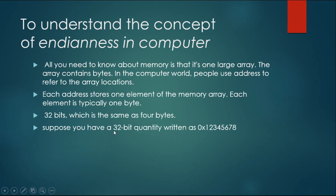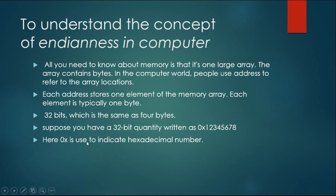Suppose you have a 32-bit quantity written as 0x12345678. Here, 0x is used to indicate a hexadecimal number. The four bytes are 12, 34, 56, and 78.